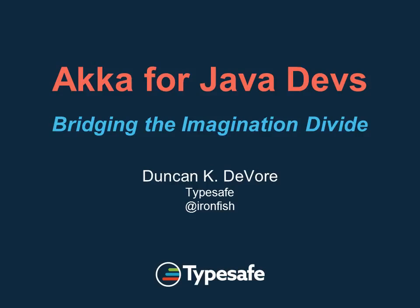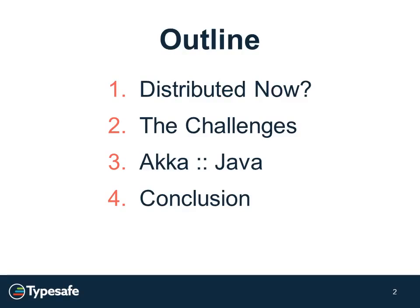It's a very powerful toolkit that you can use to solve a lot of problems that are going to increase as we start to embrace the changes we're facing as developers and architects for our companies and customers. I'm going to start out with our outline. The first thing we're going to talk about is the notion of distributed systems in general, and why this is important for developers, architects, and also business managers.